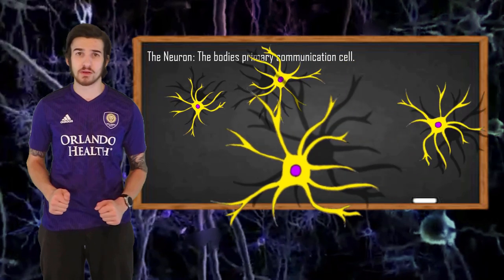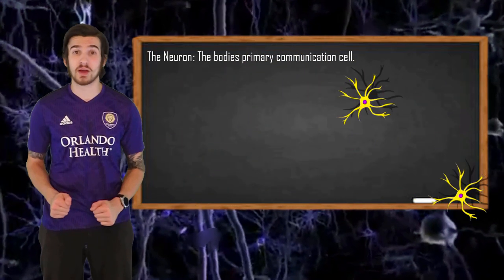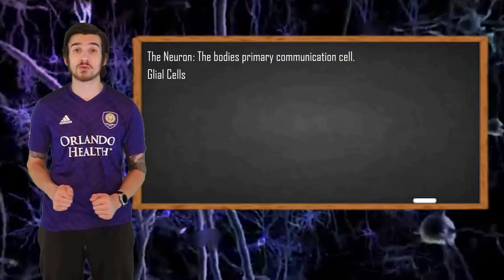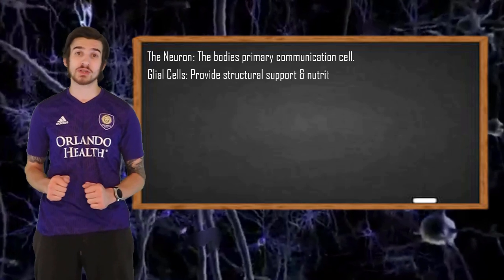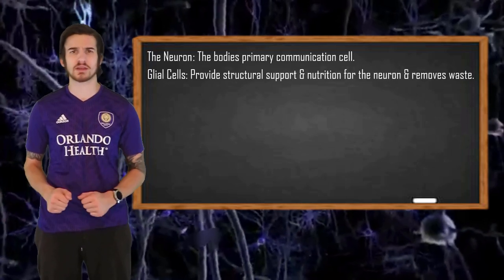Also in the brain, we have glial cells. Glial cells are going to outnumber the neuron 10 to 1 while giving structural support and by providing nutrition to the neuron and removing waste such as dead cells.